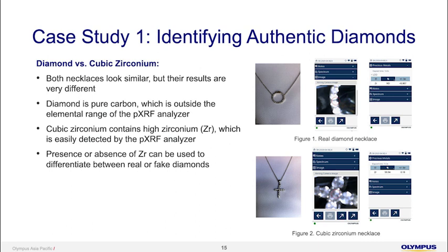From this, we can conclude that the presence or absence of zirconium can differentiate between real and fake diamond. For some synthetic diamonds in the market, some may use quartz, which is SiO2, and our equipment is able to detect silicon. If we detect silicon, we can identify the difference between a real diamond and a quartz substitute. This is how XRF's elemental measurement capability can separate real from fake gemstones.